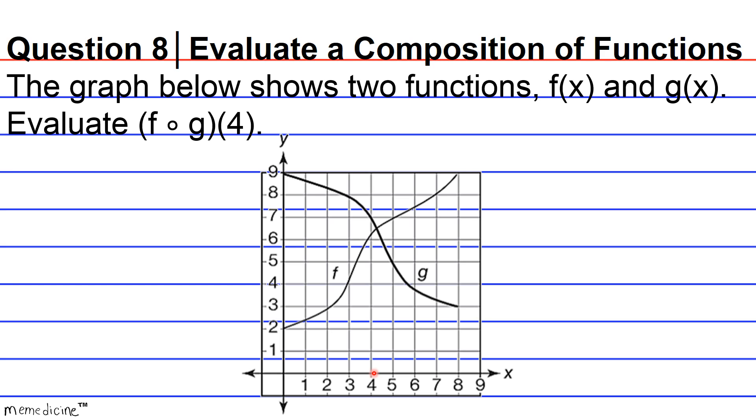All right, so hopefully by now you are able to arrive at an answer after pressing pause, and if you didn't, that's completely fine. The notation f of g of 4 is a composition of functions. It's read from left to right, but it's evaluated from right to left, the opposite of how standard English is read. And in case you're wondering, a composition of functions uses the output of one function as the input of another function.